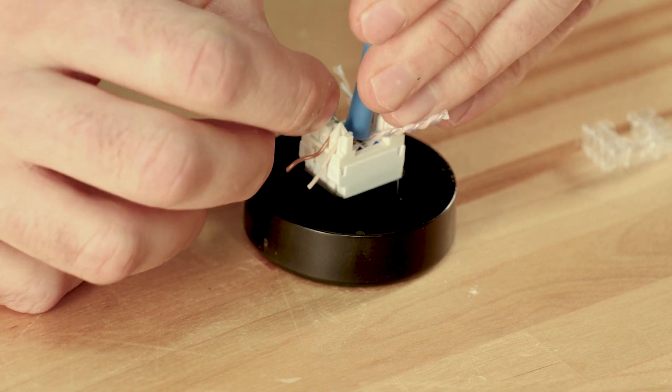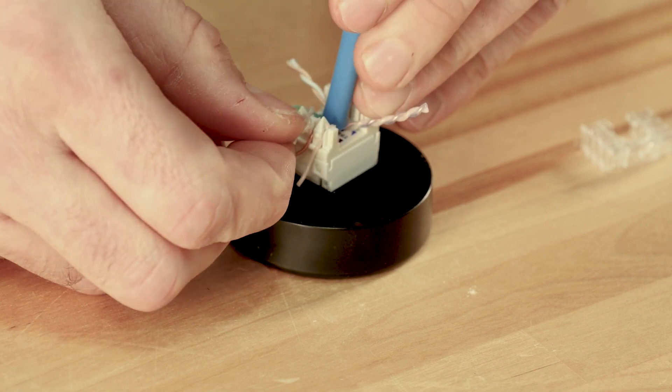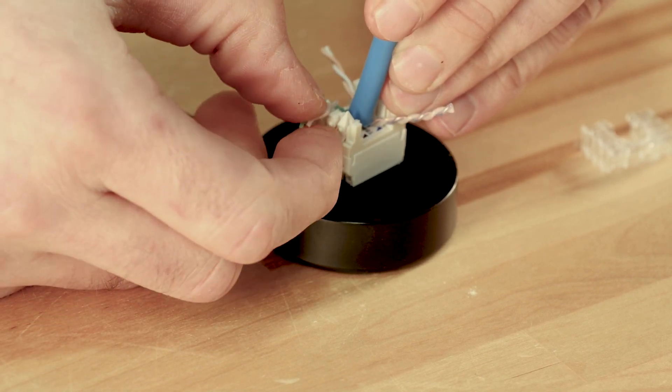Next, move on to the green pair. Try to maintain as much twist as possible, although there are times when you'll have to remove twist to get it into the jack.